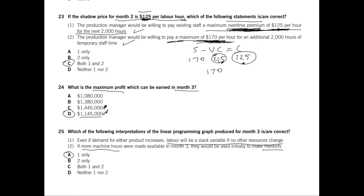That's our set on linear programming and limiting factors. Since the ACCA exam is now computer-based and you won't be asked to draw graphs, this topic is usually tested through MCQs or Section C questions requiring graph interpretation. Shadow pricing is a topic most students struggle with — make sure you get that down. Review the relevant chapter videos if you struggled with any of these questions, and practice more questions. Hope this was beneficial — see you next time!